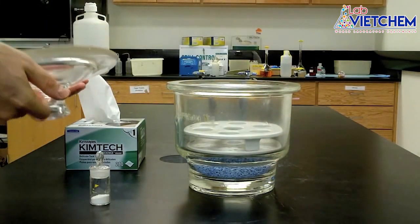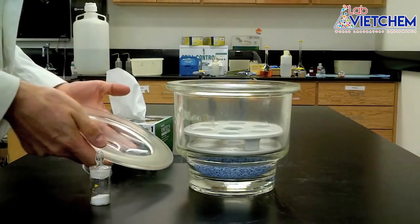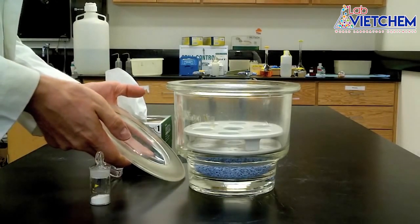You don't want desiccator parts flying all over the lab. Once the lid is off, place it on the bench grease side up to keep it clean and avoid dirty looks from your TA.